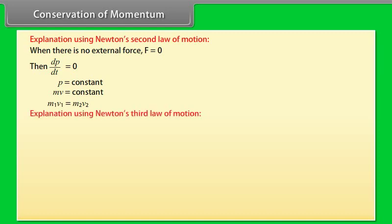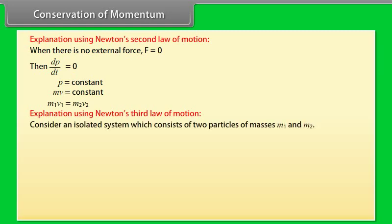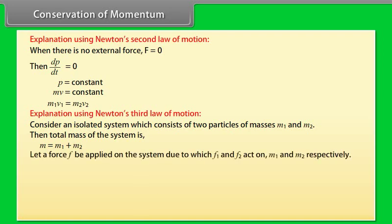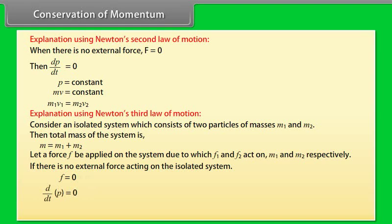Using Newton's third law: consider an isolated system of two particles of masses m1 and m2. Total mass M = m1 + m2. Let force F be applied on the system so that F1 and F2 act on m1 and m2 respectively. If there is no external force on the isolated system, F = 0, so d/dt(p) = 0, and p = constant. Hence the law of conservation of linear momentum is proved.